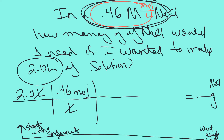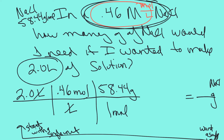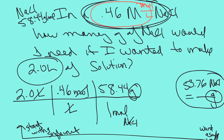I want grams, and if I can find the molar mass of sodium chloride I can solve this problem. We just calculated that — the molar mass is 58.44 grams per mole. I don't have to flip it: 58.44 grams per mole of sodium chloride. My moles cancel and I'm at grams, which is what I want. So: 2 × 0.46 × 58.44 = 53.76 grams of salt.